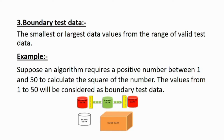Boundary test data refers to the smallest or largest data values from the range of valid test data. An algorithm is tested with boundary test data to ensure that it handles these values correctly. For example, if an algorithm requires a positive number between 1 and 50, the values 1 and 50 will be considered as boundary test data.